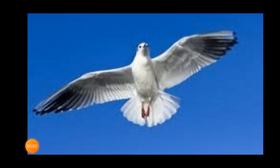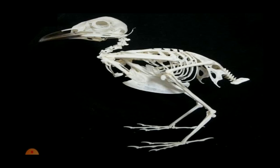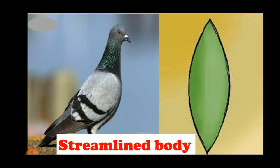Point number 1: Aerial Animals have wings covered with feathers which help them to fly. Point number 2: They have hollow bones which make their body light in weight and helps them to fly. Point number 3: They have a boat-shaped or streamlined body, meaning narrow at the ends and broad in the middle, which helps them to cut through the air while flying.